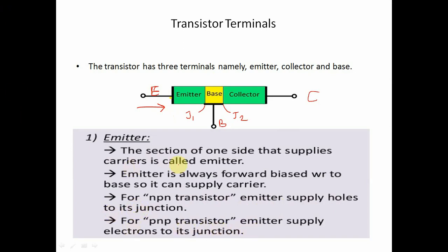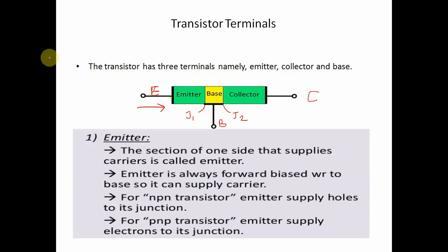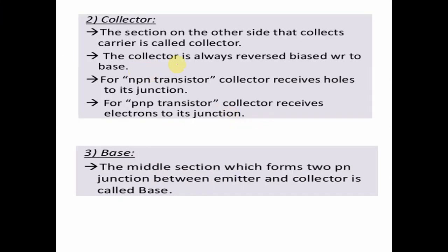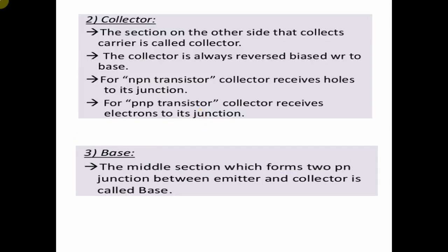The section on the other side that collects the carriers is called the collector. The collector is always reverse biased with respect to the base. For an NPN transistor, the collector receives holes at its junction. And for a PNP transistor, the collector receives electrons at the junction.